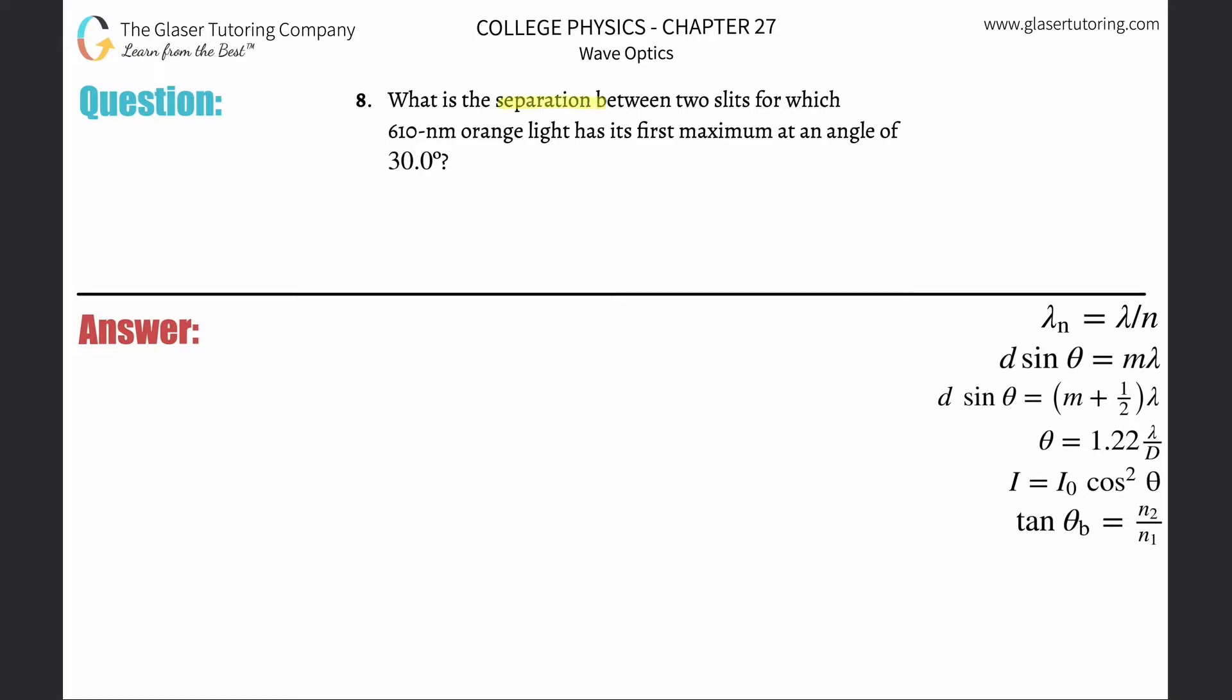Number eight: What is the separation between two slits for which 610 nanometer orange light has its first maximum at an angle of 30 degrees?